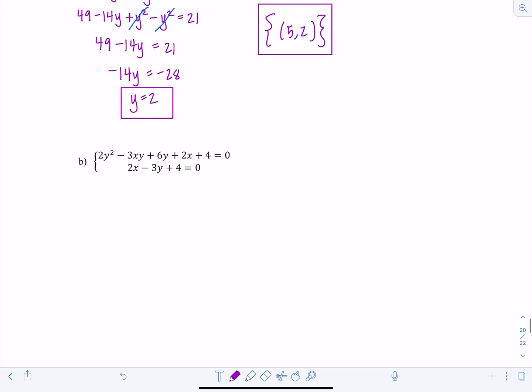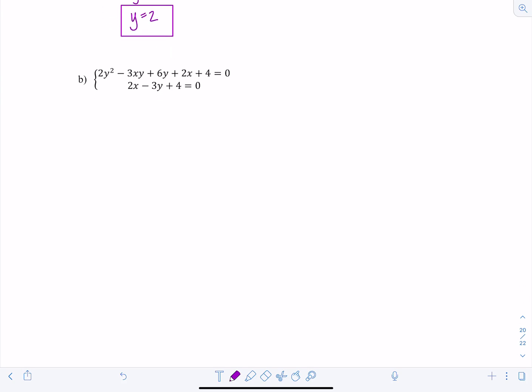Let's look at this next example, example B. We have 2y squared minus 3xy plus 6y plus 2x plus 4 is 0. What a mess. And then we have 2x minus 3y plus 4 equals 0.